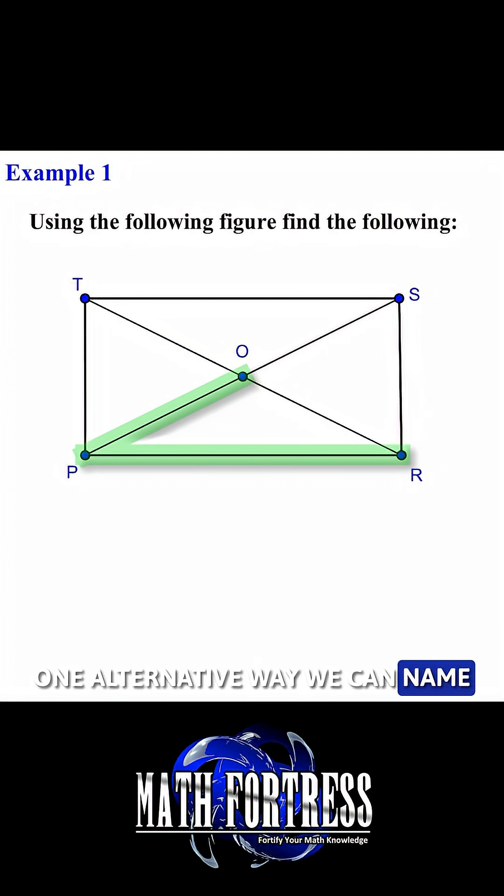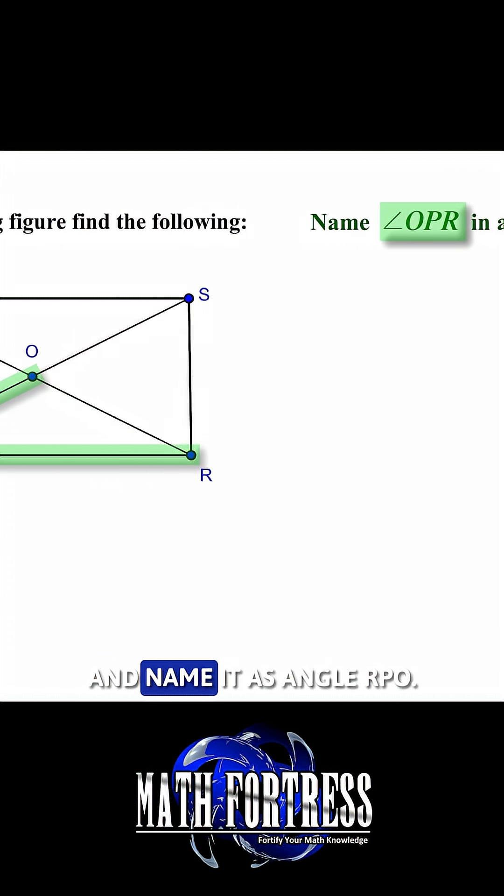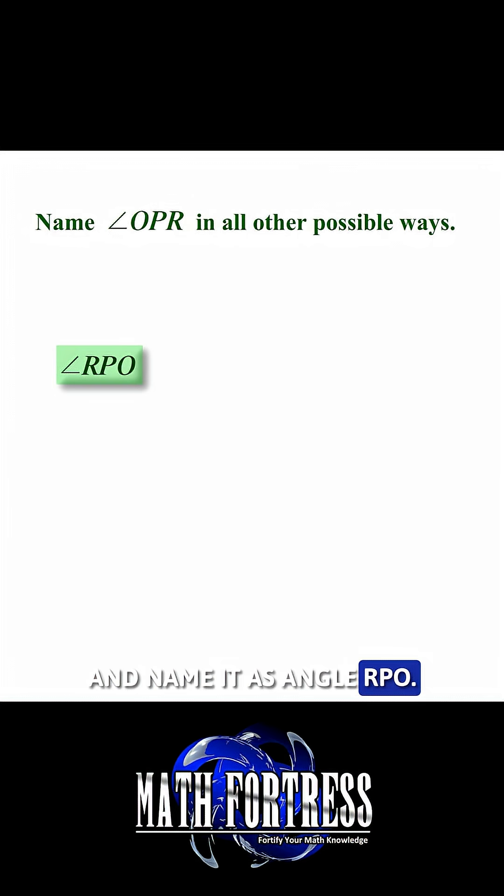One alternative way we can name this angle is by reversing the order of the points and naming it as angle RPO, making sure we denote the vertex P in the middle.